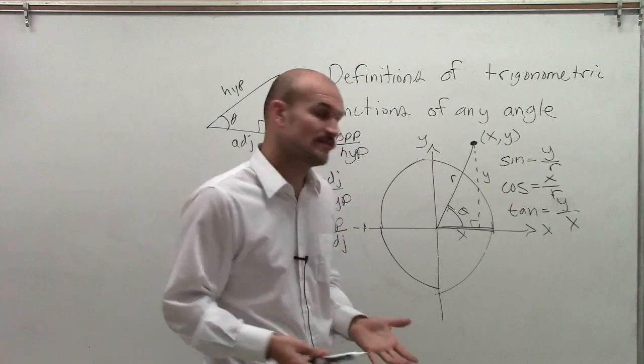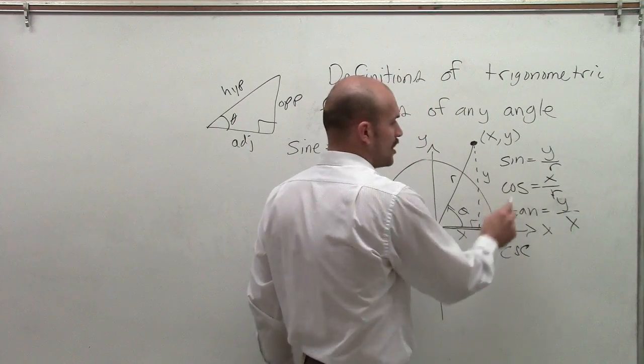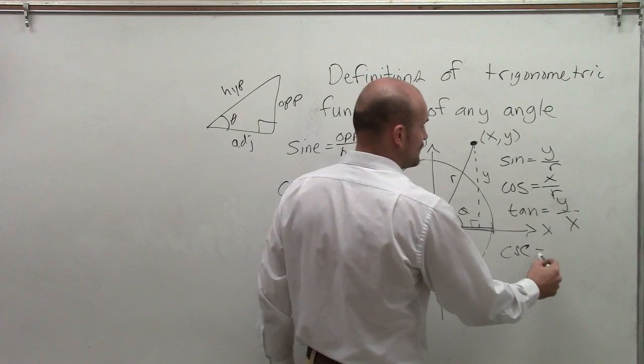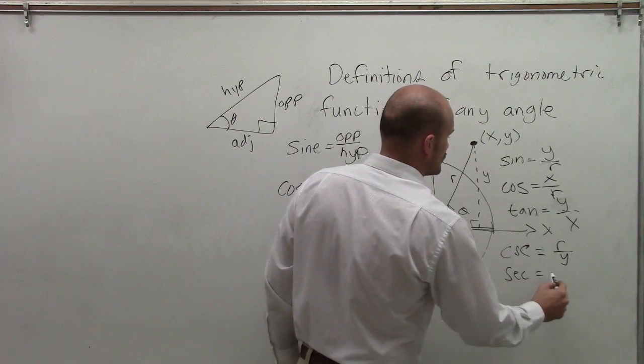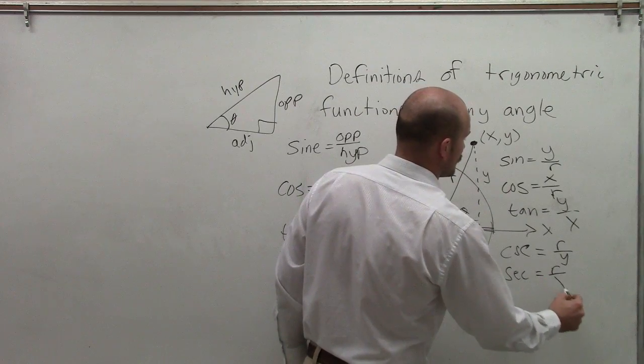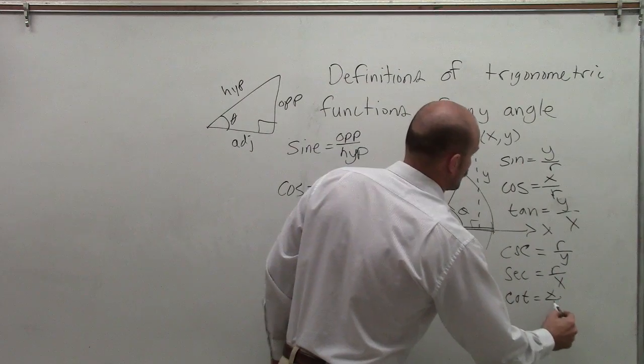Remember, we could also use our trigonometric functions which are the reciprocals of our sine, cosine, and tangent. The cosecant function would be r over y. The secant function is going to be r over x, and the cotangent function would be x over y.